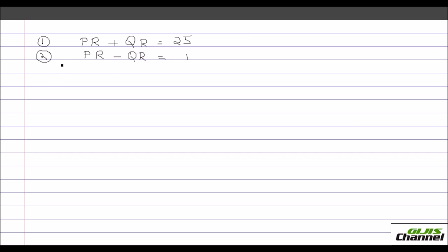So let's solve this. I'm going to add both. When I add this QR plus QR and minus QR would get cancelled. So I would have 2PR. PR plus PR is 2PR is equal to 25 plus 1, which is 26. Therefore, dividing throughout by 2, I get PR is equal to, this 2 and 2 will get cancelled. Here 2 goes 13 times. So you got your PR as 13.